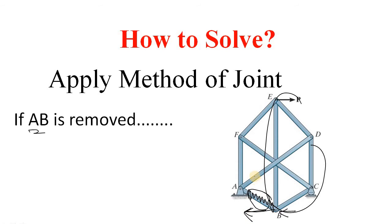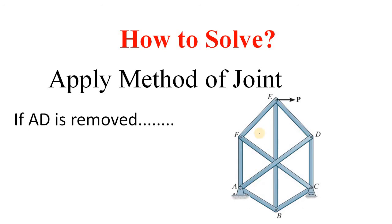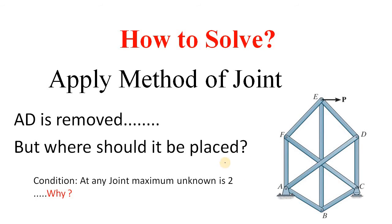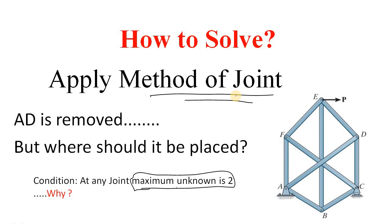The last option is member AD. Let's see if AD is removed — of course, the structure is still stable. So in this case, we will remove or relocate member AD. But where should it be placed? The condition for placing it is that when we replace or relocate it, at that new joint the maximum number of unknowns should again be two. Otherwise, we cannot apply the method of joint to solve this truss.